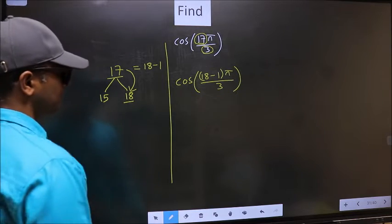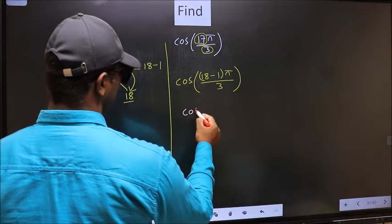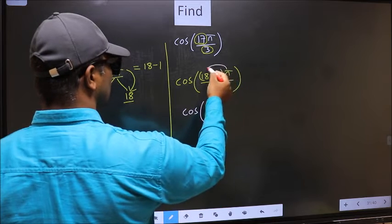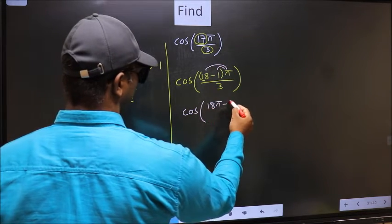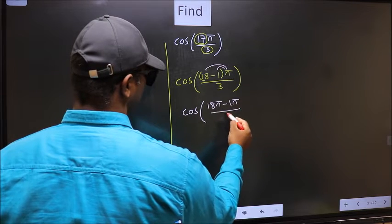Next, cos. Now you should open up the brackets. You get 18π minus 1π by 3.